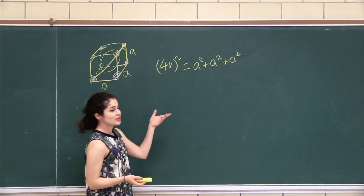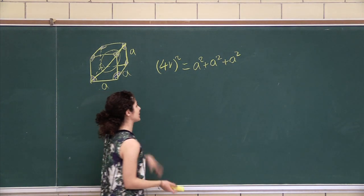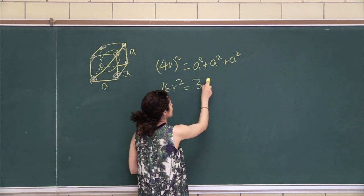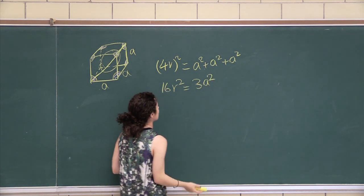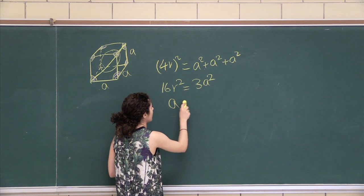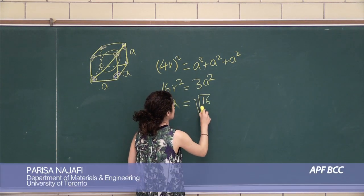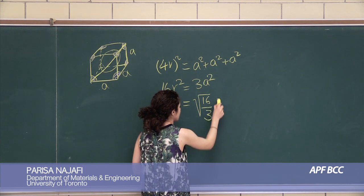Now that you have this relationship, you can just solve for the A to R ratio. So 16R squared is 3A squared. I'm going to flip that around. A is equal to root 16 over 3, times R,